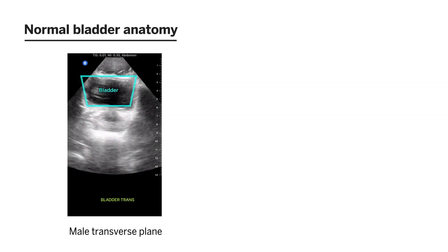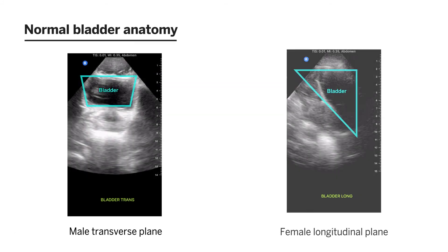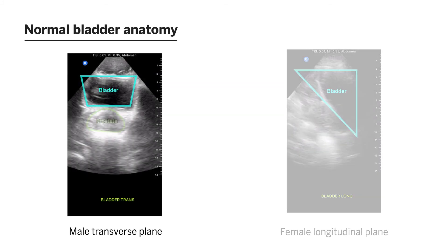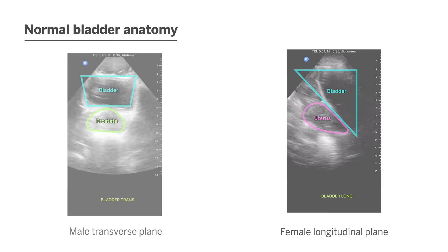In the transverse and longitudinal planes: in men, you should see the prostate gland in the far field deep to the bladder in the transverse plane. In women, you should see the uterus posterior to the triangular bladder on longitudinal views.